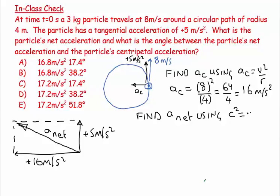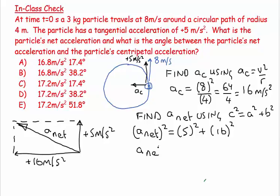To find the net acceleration, we use Pythagoras: c squared equals a squared plus b squared. So a_net squared equals 5 squared plus 16 squared. That gives us 25 plus 256, which is 281. Taking the square root, a_net equals approximately 16.76 meters per second squared.